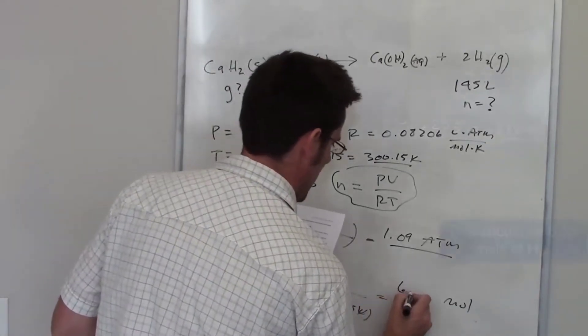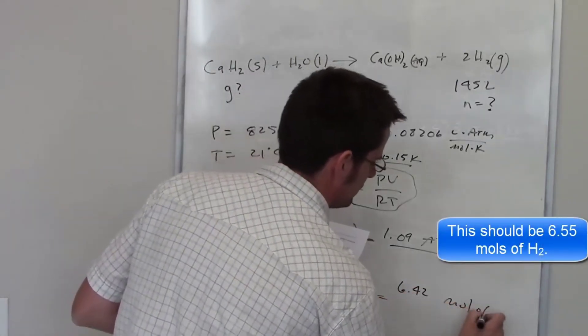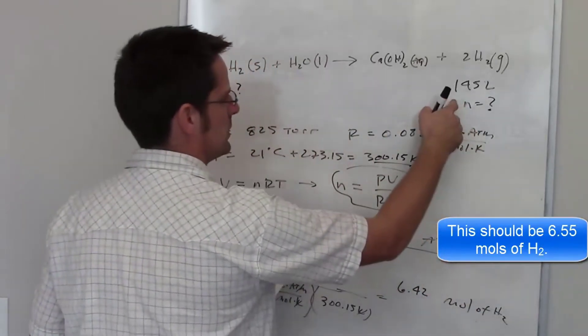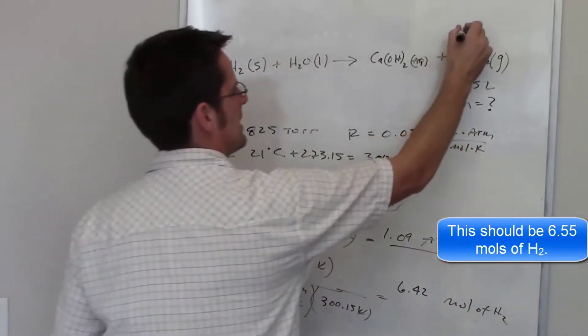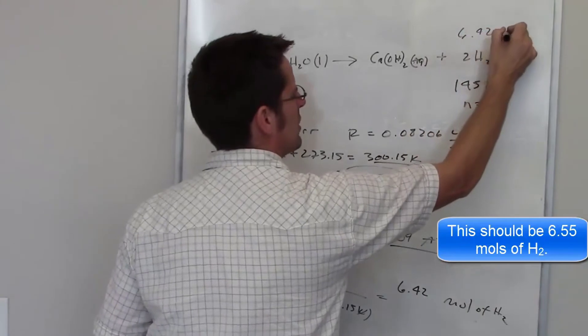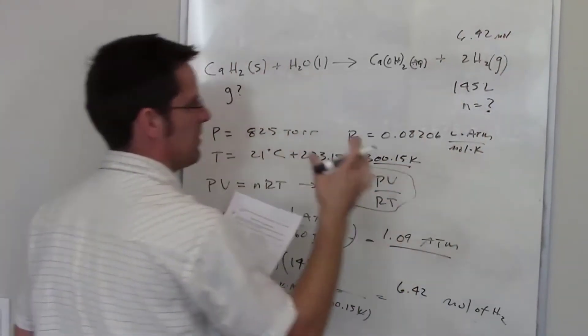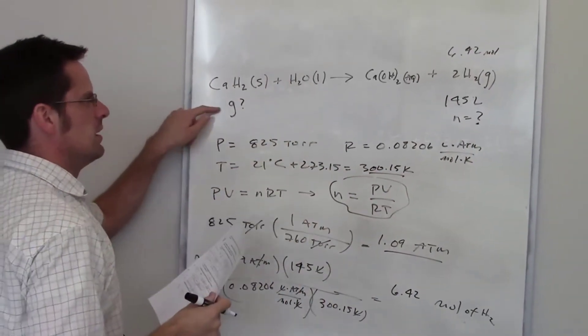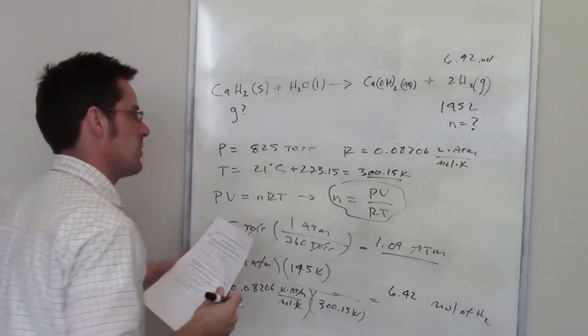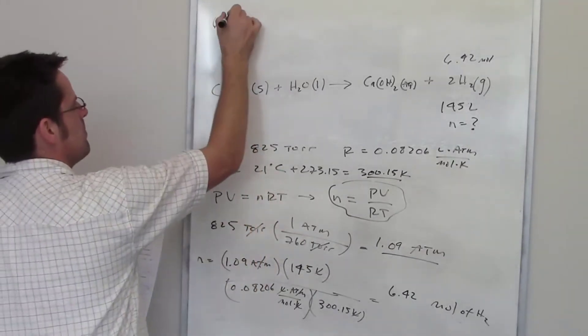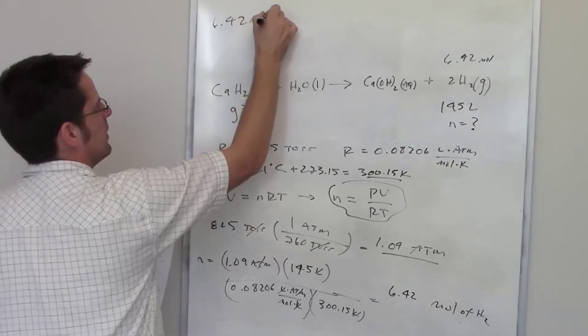I times all that through in my calculator and I end up getting 6.42 moles of hydrogen. Remember, this is moles of hydrogen, so I'm going to write that down: 6.42 moles of H2. That is how many moles I'm going to be producing. I want to eventually get to grams of calcium hydride.